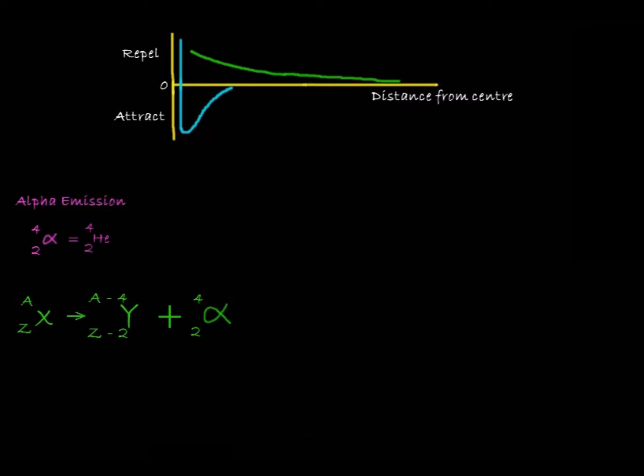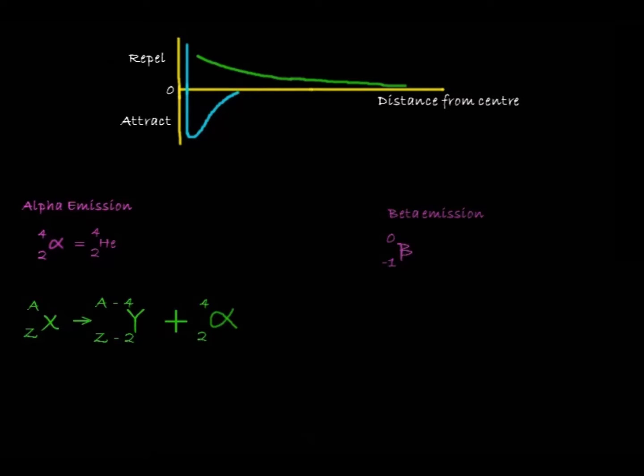While alpha radiation is the release of a helium nucleus, beta radiation is the release of an electron or a positron, which we'll talk more about in a later video. In this video, we'll talk about beta minus emission. This happens in neutron-rich isotopes.